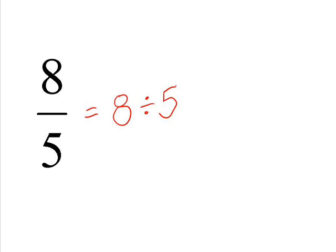So 8 divided by 5 equals 1 with 3 as a remainder. You just put the remainder over the bottom number of the fraction, so 3 fifths. The answer is 1 and 3 fifths. Bottom number stays exactly the same.